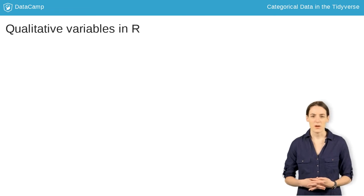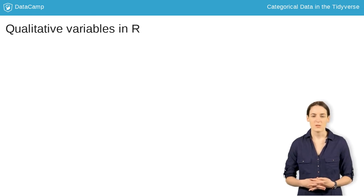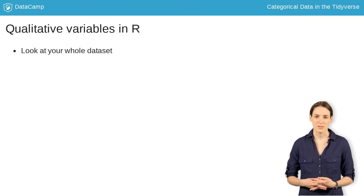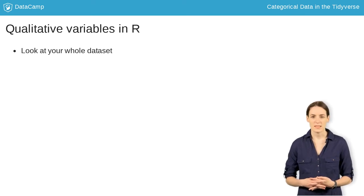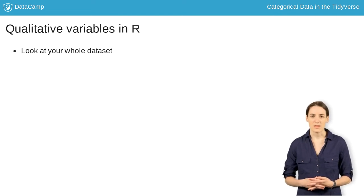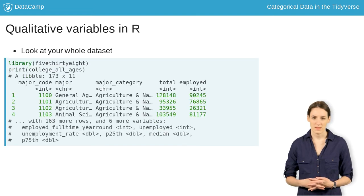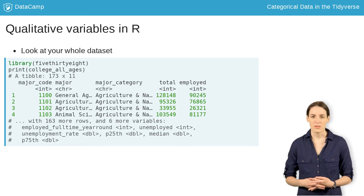So how do you know whether your variable is currently stored as a factor or character? There are two main methods. First, you can look at the printed output of your tibble. If you store your dataset as a tibble, a modern data frame, each column type is automatically printed out below or next to the column name. Let's print out the College All Ages dataset, another one from the 538 package. We can see that there aren't any factors — Major and Minor Category are both character columns.